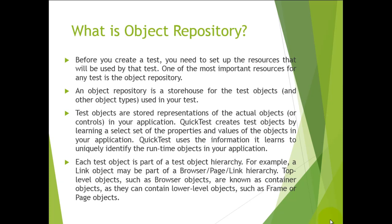Each object is part of a test object hierarchy. For example, a link object may be part of a browser or a page. A button object might have a parent of dialog box or frames. Top level objects such as browser objects are known as container objects — they contain lower level objects such as frames or page objects.